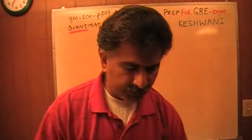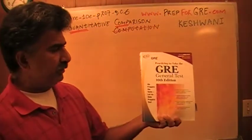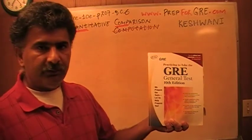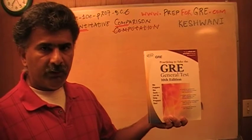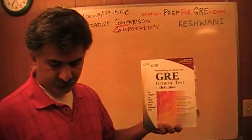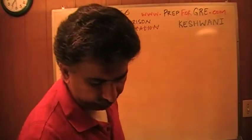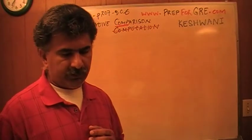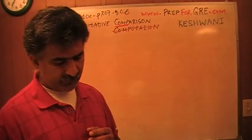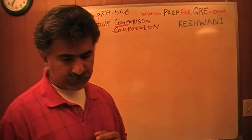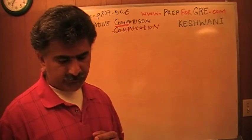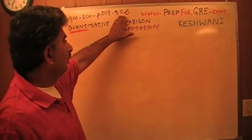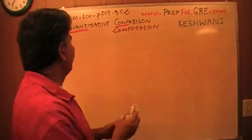I have been solving math problems for GRE out of this book here. Practicing to take the GRE General Test, 10th edition. If you do not own this book already, purchase one immediately. This is what you need in order to practice for the exam. It has 7 real exams. I am at exam number 3. The problem I am about to solve is on page number 207 out of the 2nd exam's quantitative comparison question number 7.